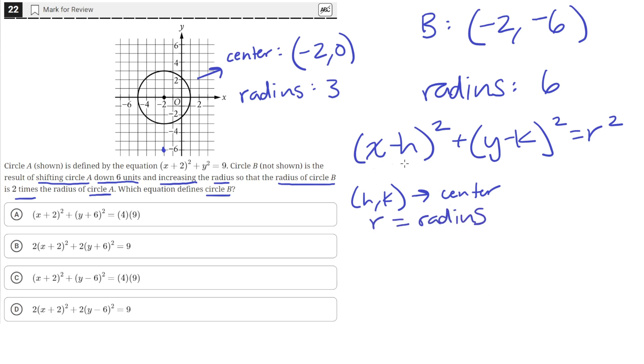So the coordinates of the center, we want them to be negative 2, negative 6. And the radius r, we want it to equal 6 for circle B.